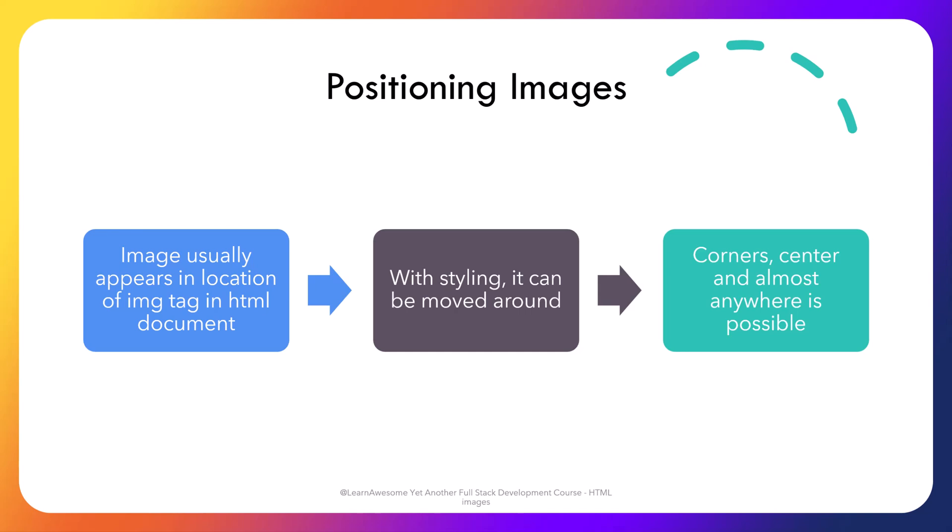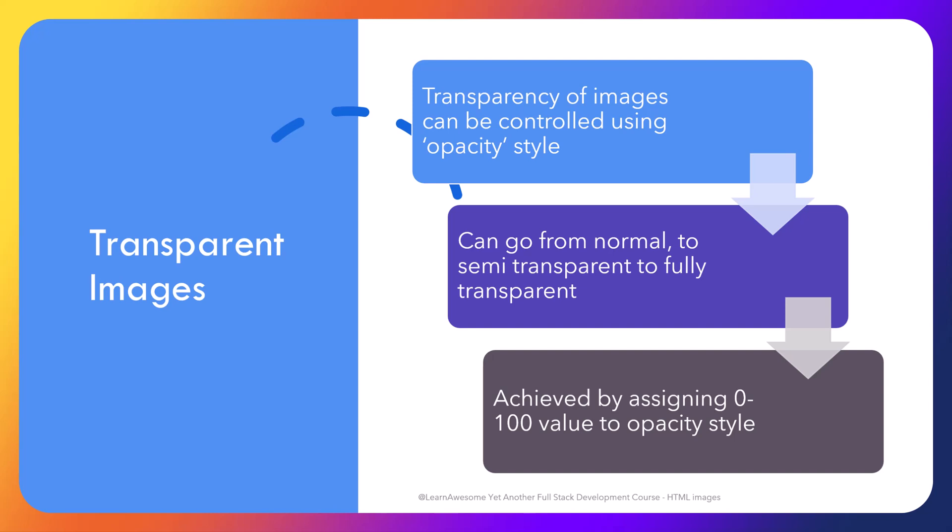Though images usually appear where the image tag appears in the HTML document, we can leverage CSS styling properties to move them around the web page to a location of your choice, such as a corner, center, or any position using CSS. HTML styling has a property called opacity, applicable to many elements, which allows you to control their transparency. You can make an element render normally, semi-transparent, or invisible by providing a 0 to 100 value to the opacity style. You can also place HTML elements on top of one another and use opacity in creative ways.